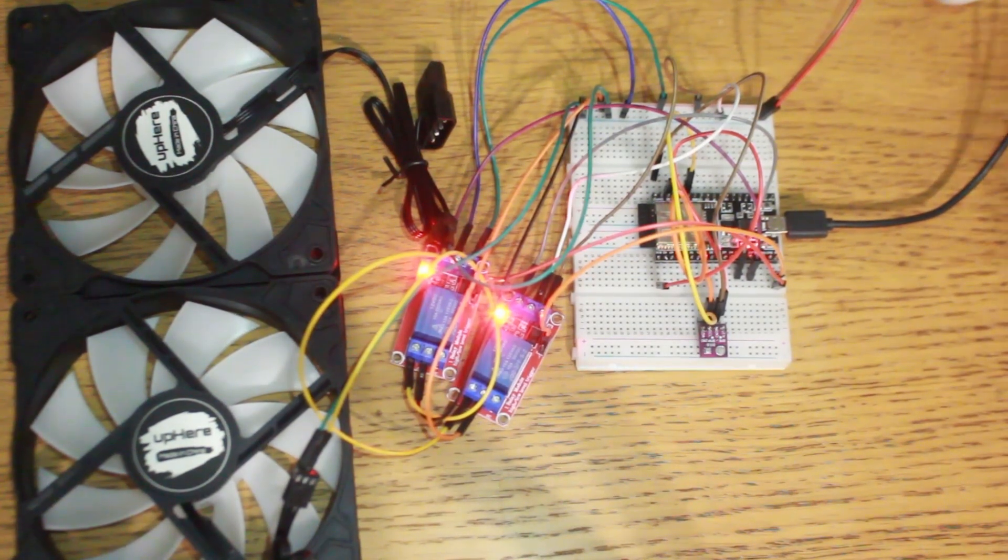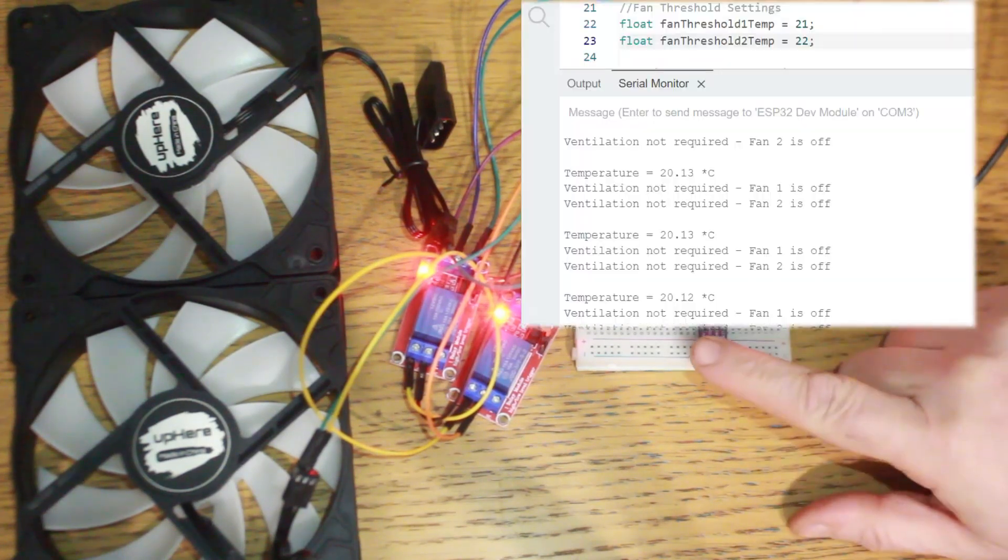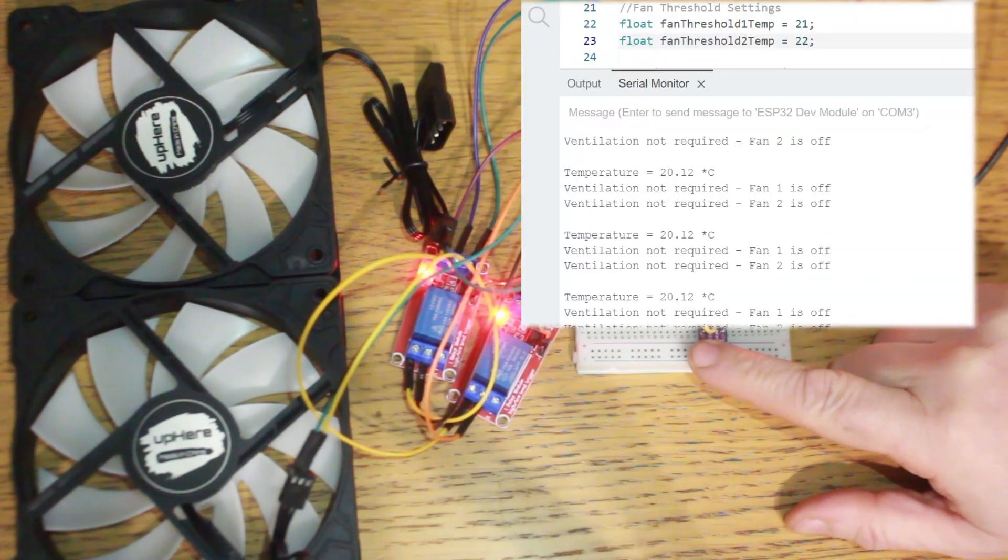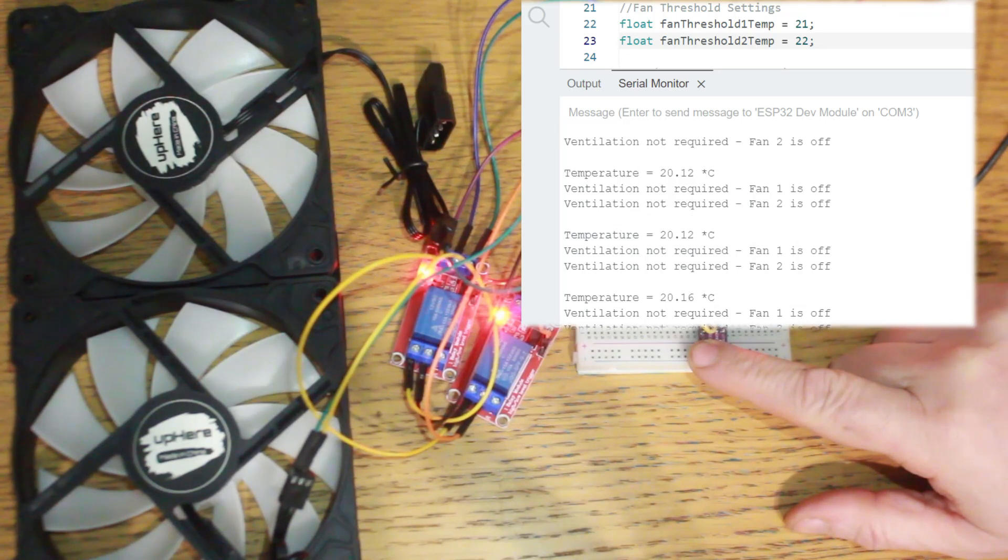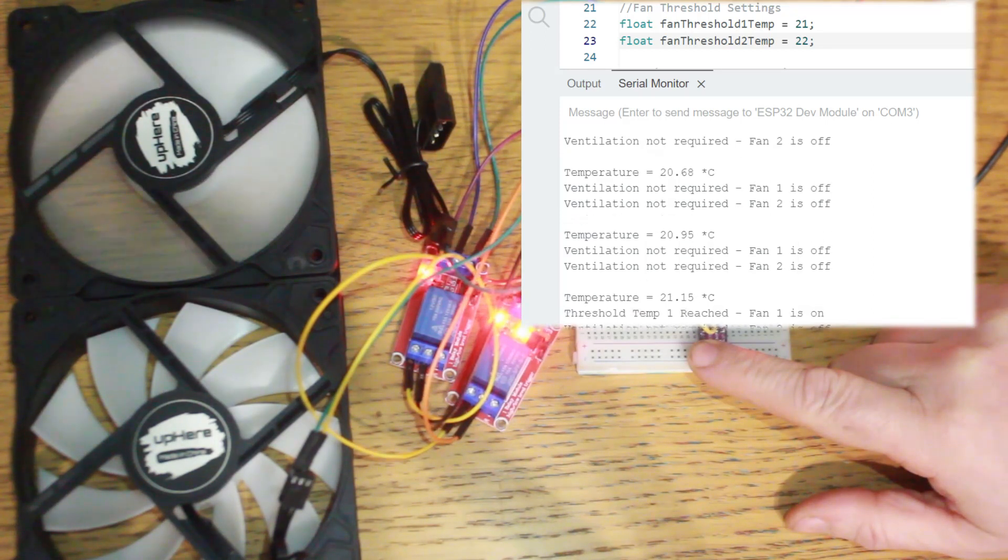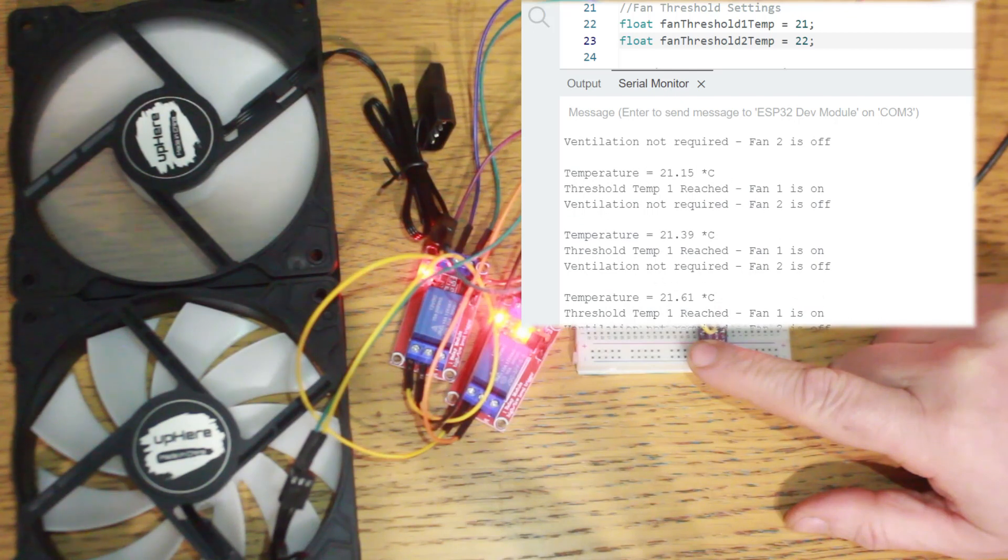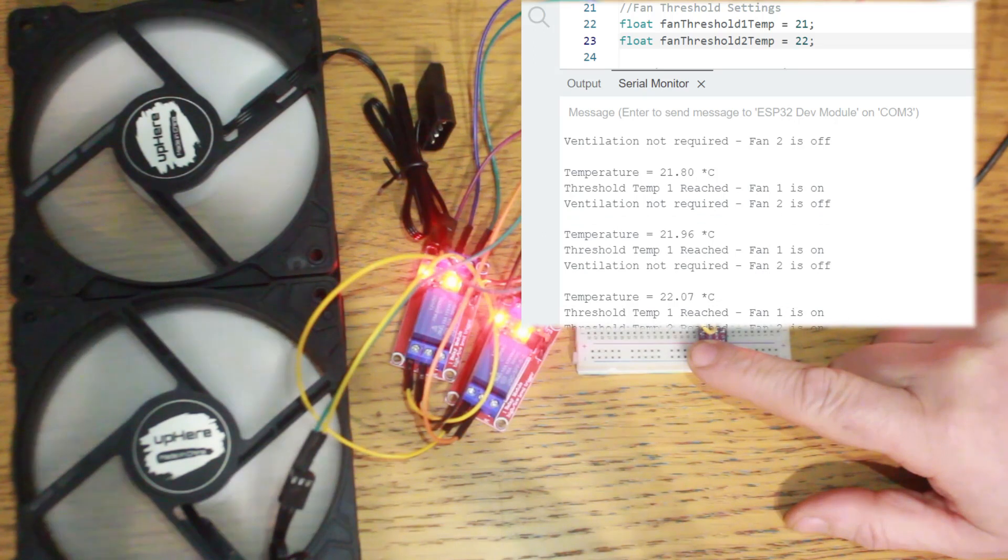So let's put my finger on to the temperature sensor and we'll start to see the temperature increase until it reaches that first threshold, which I think you can see there marked as 21 degrees. There we go. Relays come on, the fans come on and temperature keeps rising until it eventually reaches that second threshold of 22 degrees. Second fan comes on.